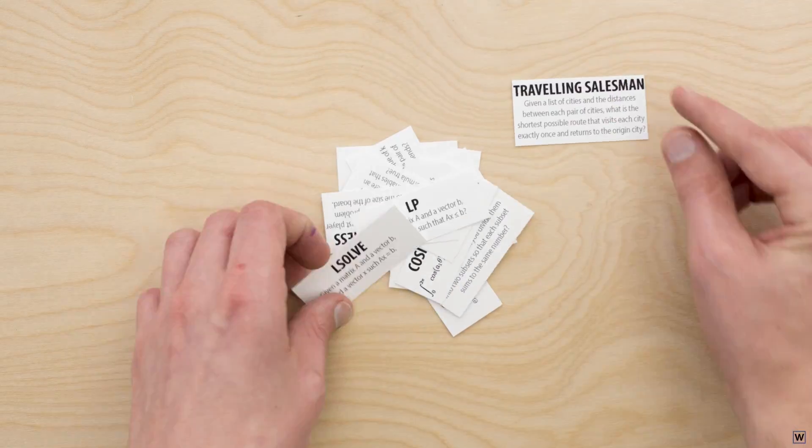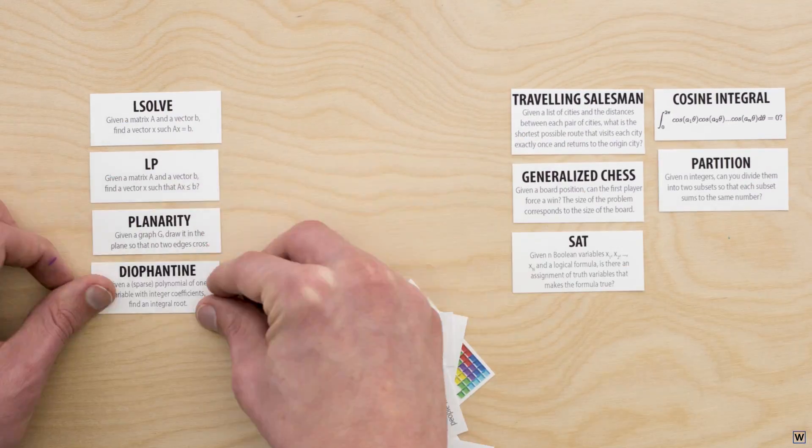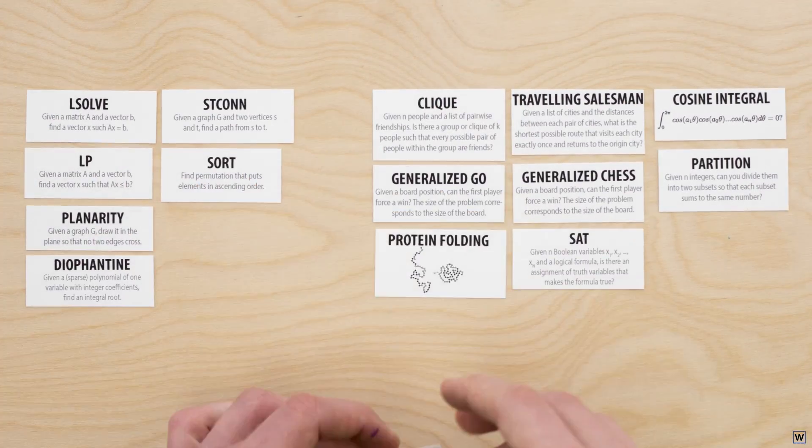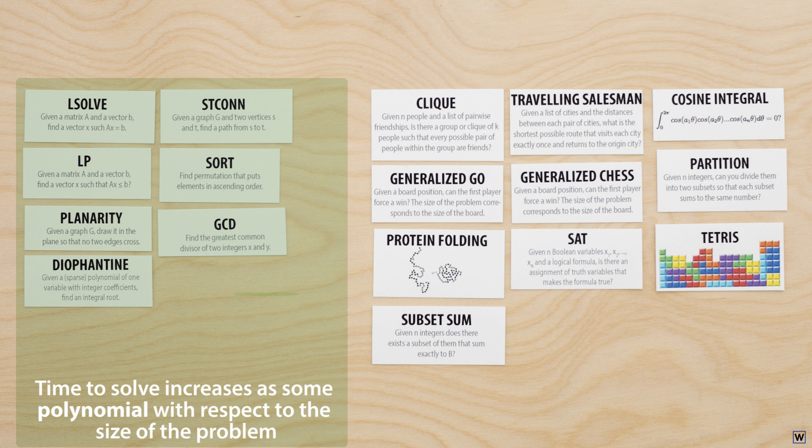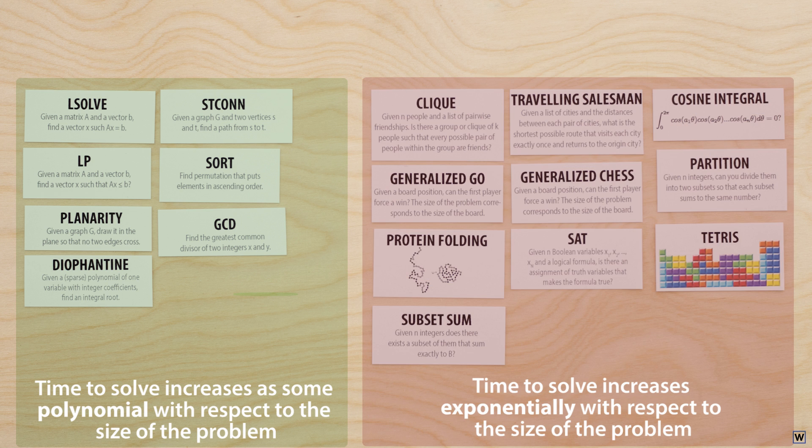Interestingly, since then we've learned that many of the problems we care to solve naturally fall into one of two categories: those that can be solved in an amount of time that increases as some polynomial with the size of the problem, and those that can be solved in an amount of time that increases exponentially with the size of the problem.